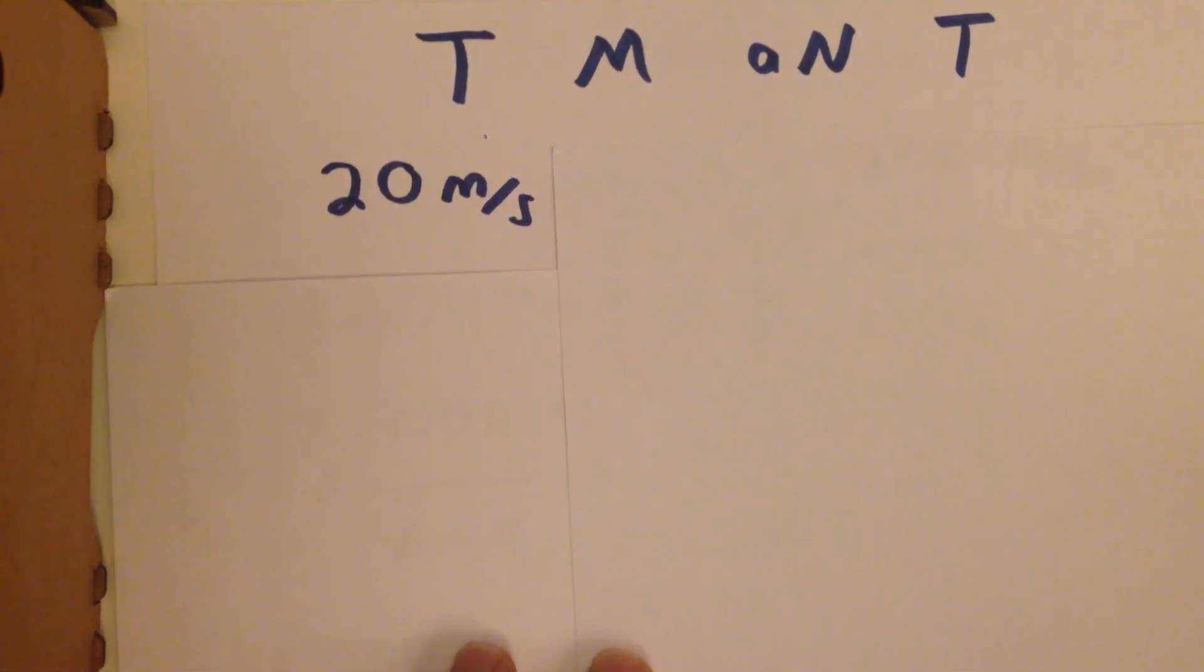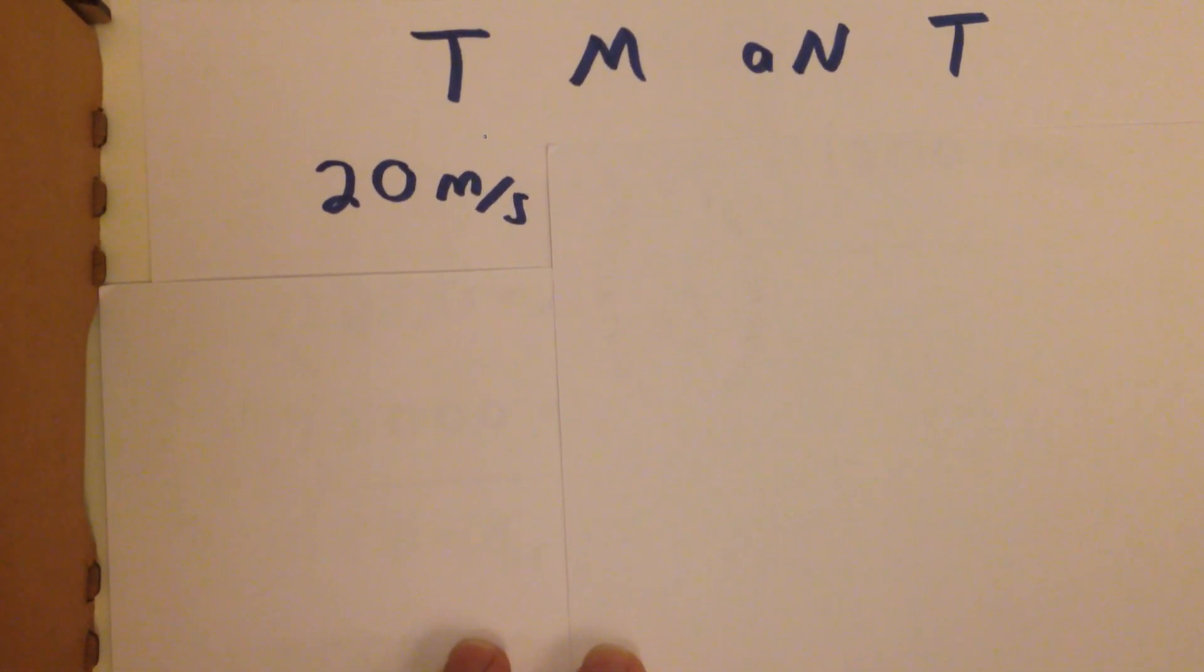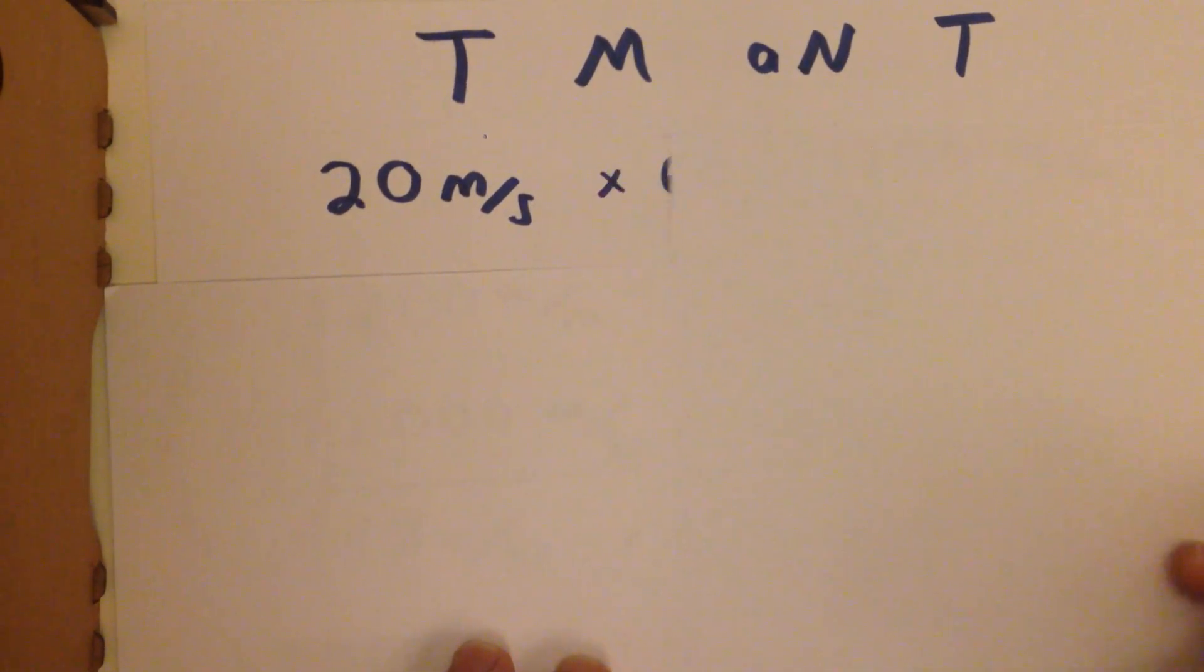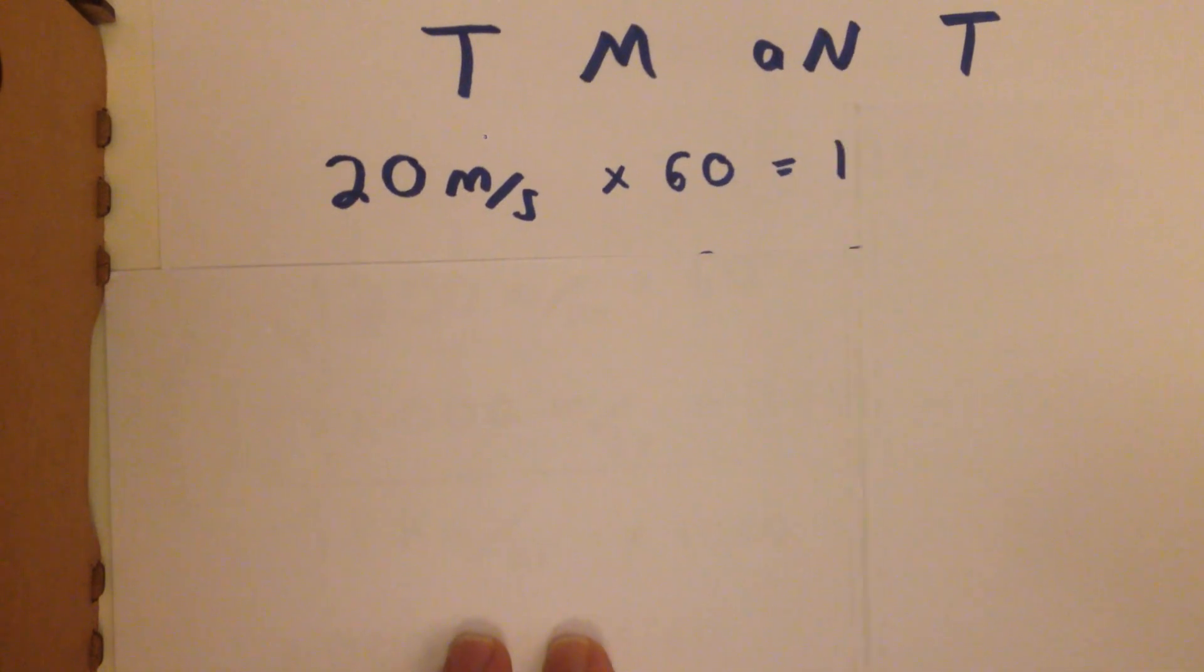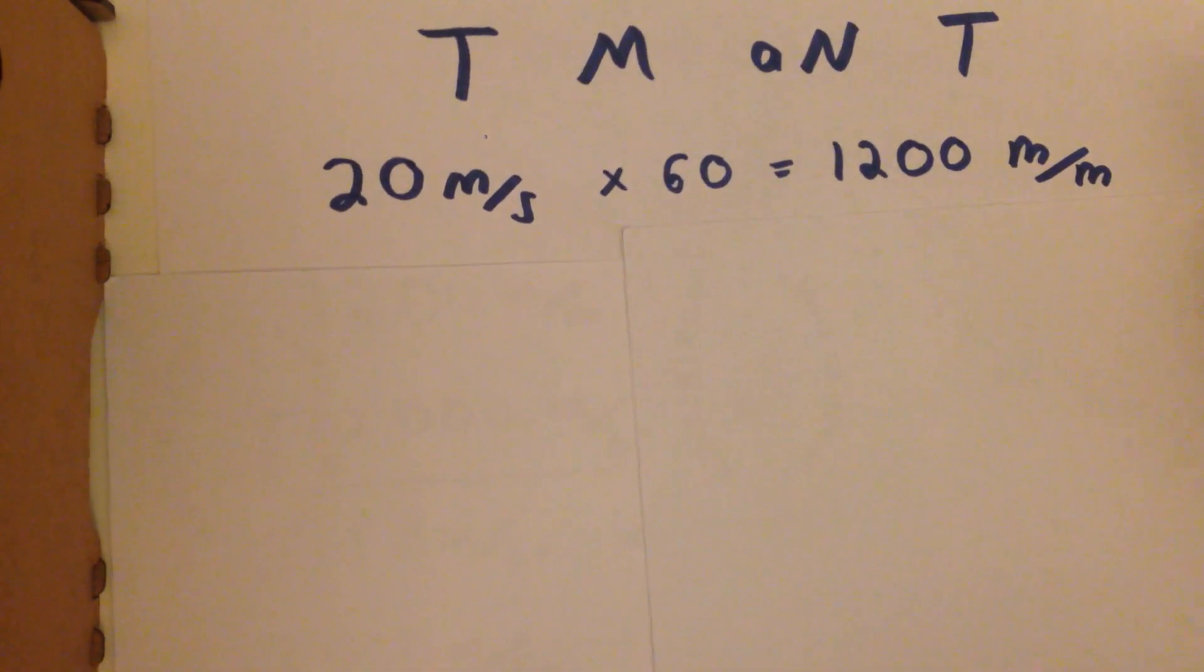So, 20 meters per second. You think, how far is that in a minute? Well, there's 60 seconds in a minute, so we times by 60, and we get 1,200 meters per minute. We got meters per minute,